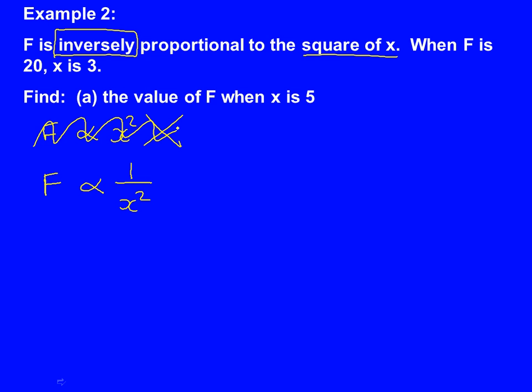Now we're going to use the same method as previous. We can't solve it with this proportional sign in the middle, so we change it to F equals, and we've got our 1 over x squared, but we must include a K times at the front. Our job now is to actually work out our value of K.